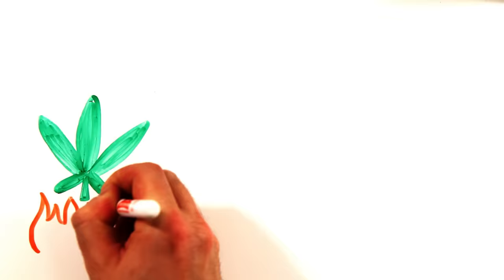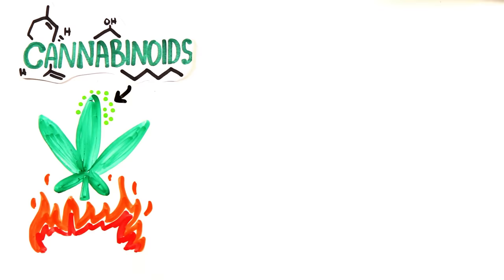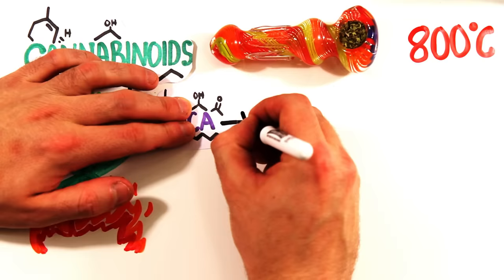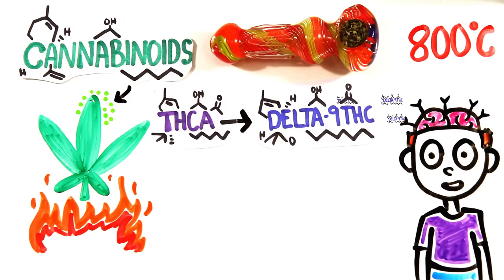When you heat cannabis, you effectively change the chemical makeup of compounds within it called cannabinoids. Smoking heats it to around 800 degrees Celsius and converts THCA to delta-9-THC, which binds to receptors in your brain, making them continually fire and causing your imagination, thoughts and perceptions to magnify.